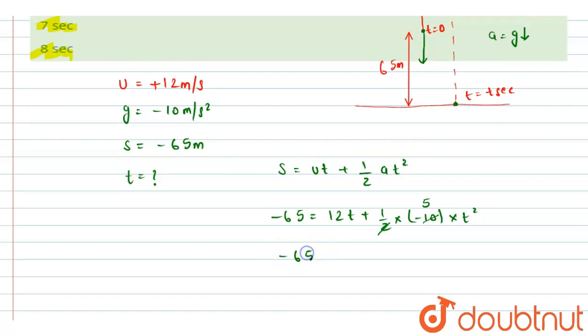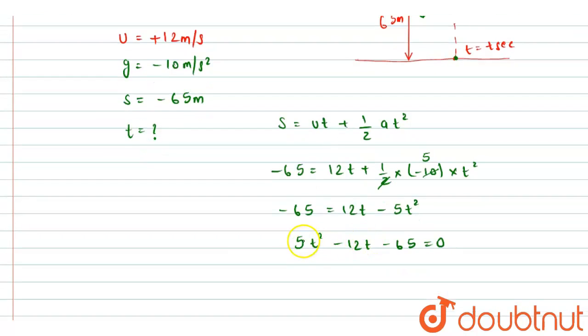And if I write this equation, we will get 5t square minus 12t minus 65 equals to 0. So here we have got a quadratic equation.